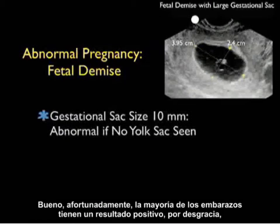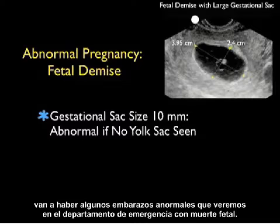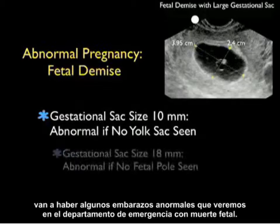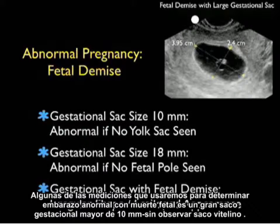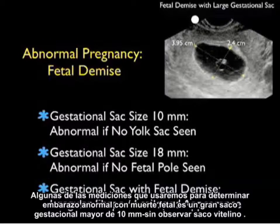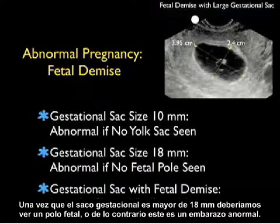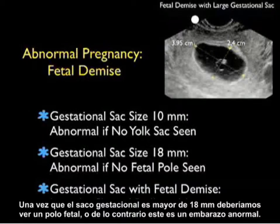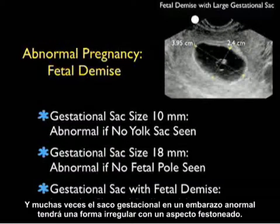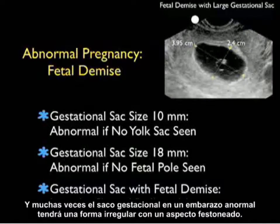While fortunately most pregnancies have a successful outcome, unfortunately there are going to be some abnormal pregnancies consistent with fetal demise seen in the emergency department. Some measurements used to determine an abnormal pregnancy with fetal demise include a very large gestational sac greater than 10 millimeters if no yolk sac is seen, and once the gestational sac is greater than 18 millimeters, we should see a fetal pole or else this is an abnormal pregnancy. Many times the gestational sac in an abnormal pregnancy will have an irregular shape with a scallop-type appearance.